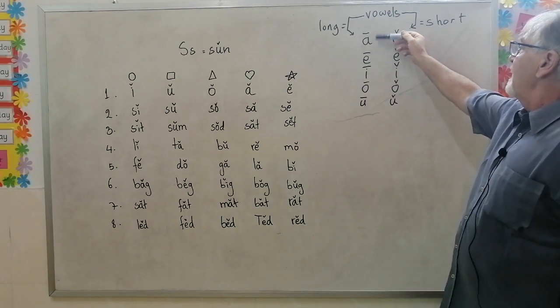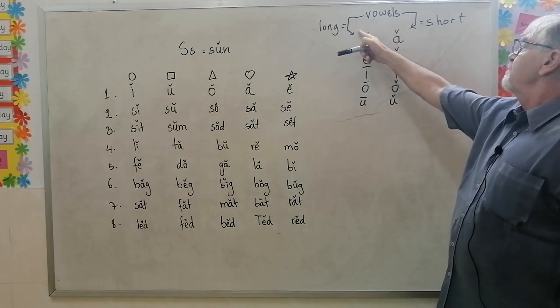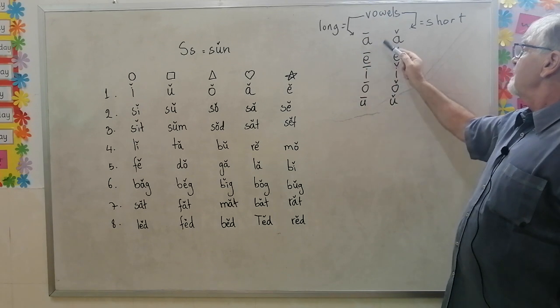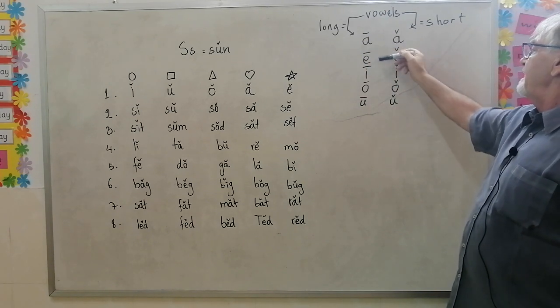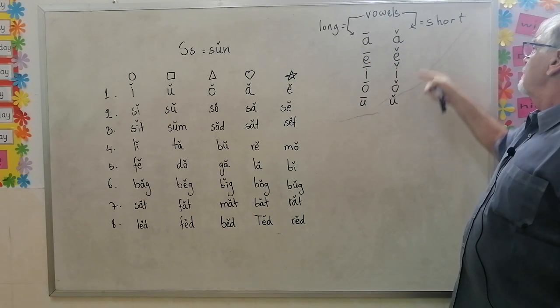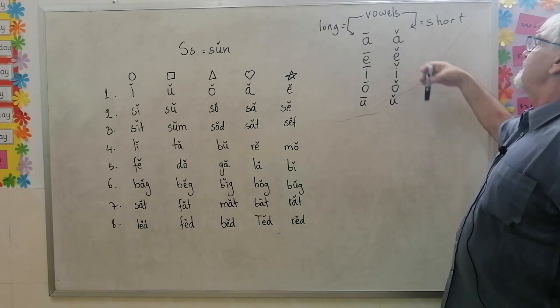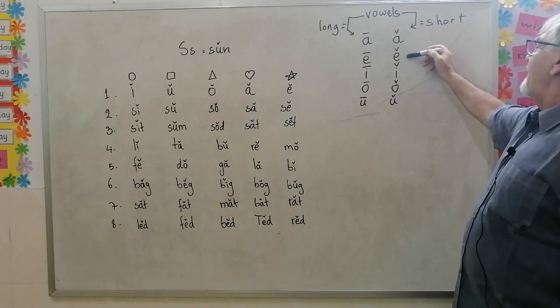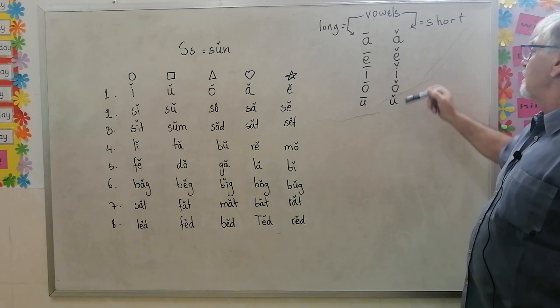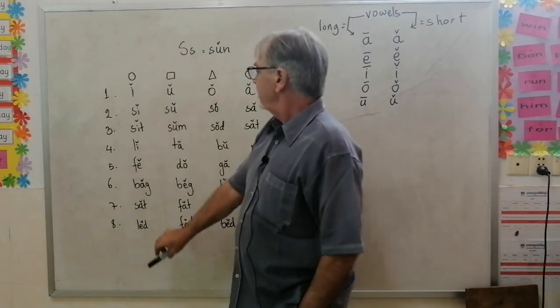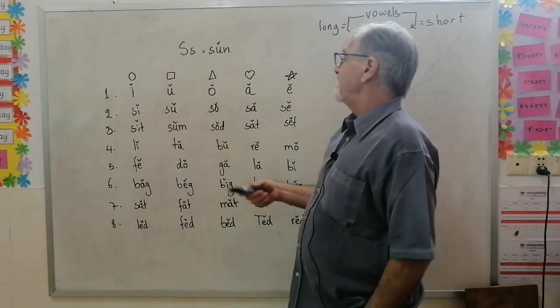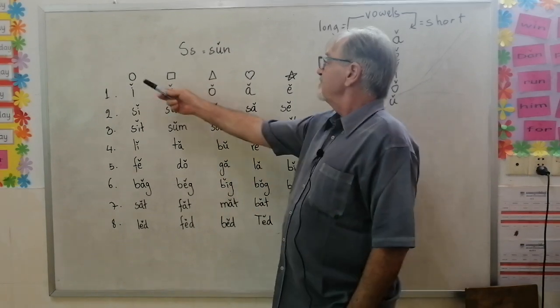Here's the vowels. Long vowel equals the line, which means a, e, i, o, u. Short vowel looks like a v, so a, e, i, o, u. Now we put these with these in here and they will make a sound.